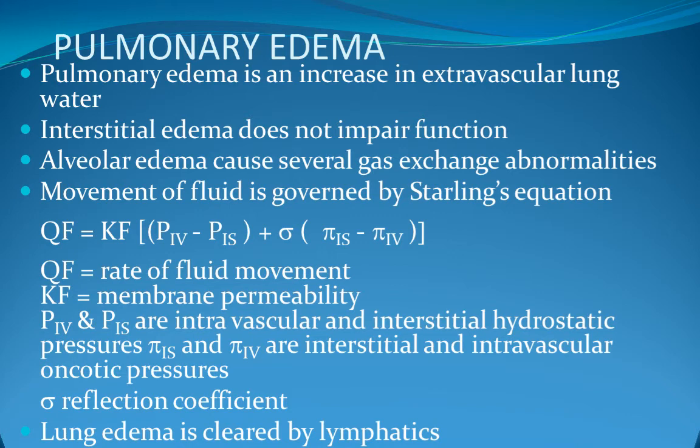Pulmonary edema is defined as accumulation of fluid in the alveoli and lung parenchyma resulting in impaired gas exchange. It can be classified as cardiogenic, secondary to left ventricular failure, or non-cardiogenic, secondary to direct lung injury such as pneumonia, inhalation of smoke, ammonia, or chlorine, trauma or pulmonary contusion, aspiration, re-expansion, or indirect injury from sepsis, cardiopulmonary bypass, or multiple blood transfusions. Pulmonary edema develops when there is net movement of fluid from blood vessels into the interstitial spaces and in some cases into the alveoli.